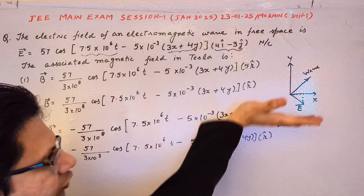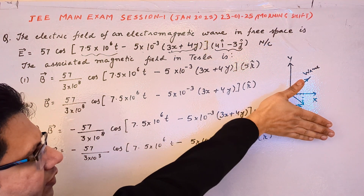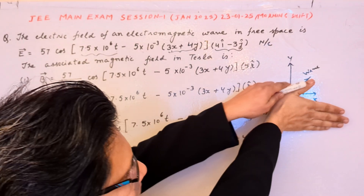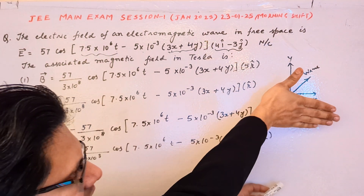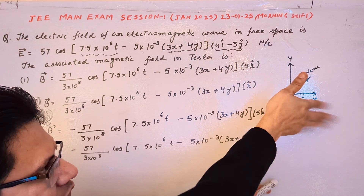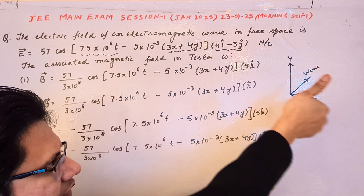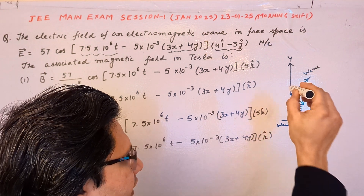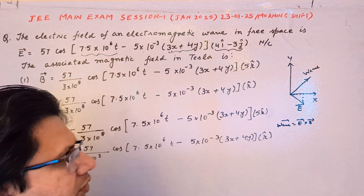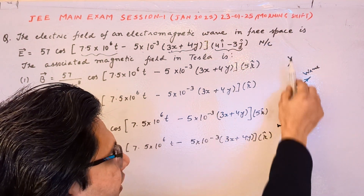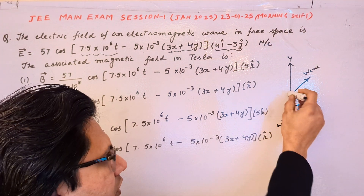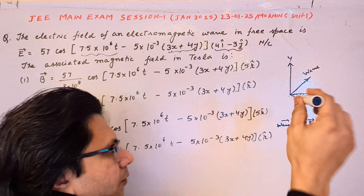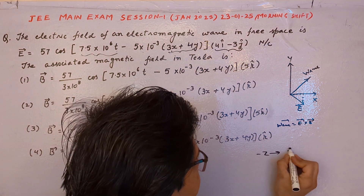According to the rules of the cross product, if we place our hand along E and curl our fingers toward the B direction, the thumb points in the direction of the wave. The thumb is in the direction of the wave, the fingers are along the first vector E. The direction of B is perpendicular to both the wave and the electric field — it points into the plane of the board. According to the right-hand coordinate system, x is this direction, y is this direction, and z is outward. So the inward normal is the minus z direction, meaning the magnetic field is along the minus z direction, i.e., minus k cap.